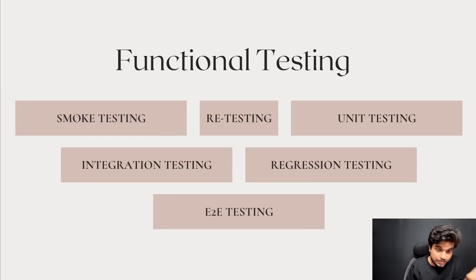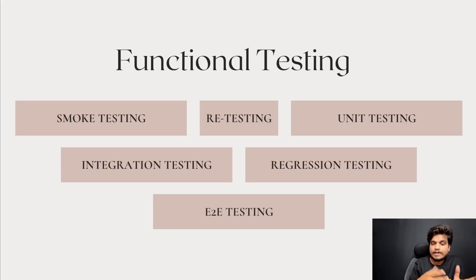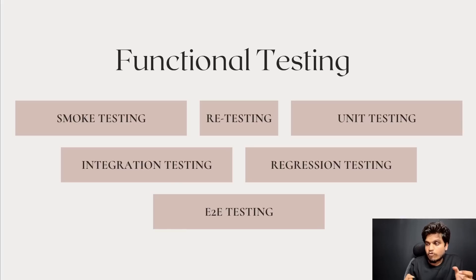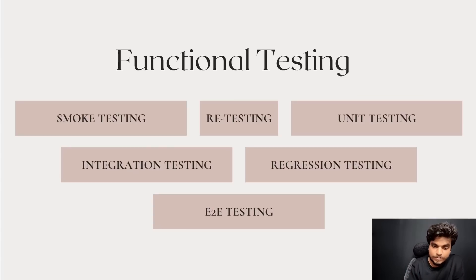Examples of functional testing include: smoke testing — which checks if a particular application or project is ready for testing. Also unit testing, which is typically done by developers. There is also integration testing, regression testing, and end-to-end (E2E) testing.